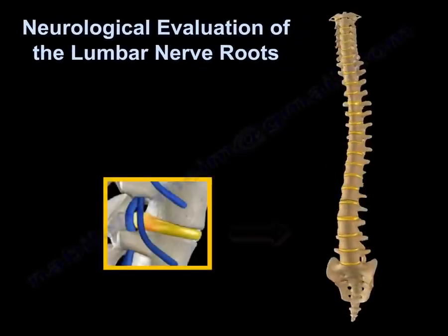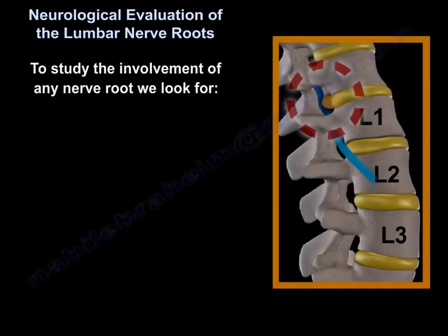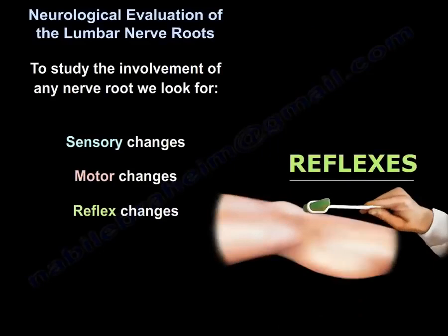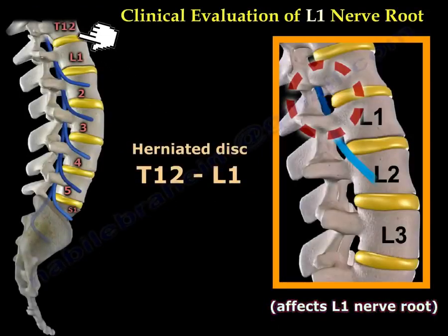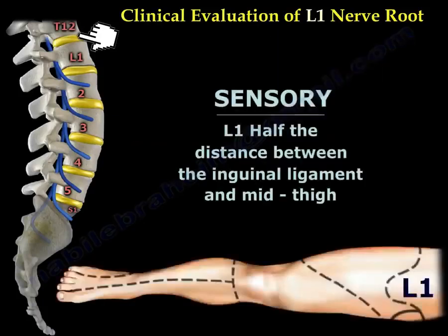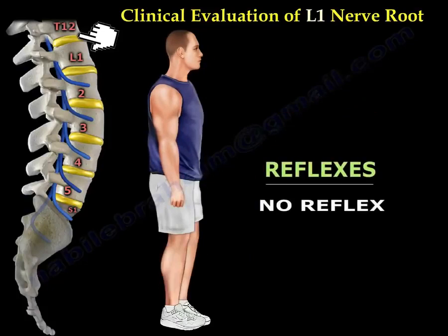Neurological evaluation of the lumbar nerve roots. To study the involvement of any nerve root, we look for sensory changes, motor changes, and reflex changes. If there is a herniated disc between T12 and L1, it will affect the L1 nerve root. The sensation of L1 is half the distance between the inguinal ligament and mid-thigh. Motor: hip flexion comes from the iliopsoas — L1, L2, and L3. There is no reflex for L1.